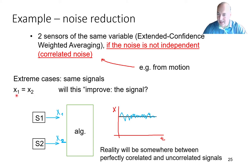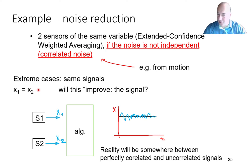The extreme case is that I will use signal x1 equal to signal x2 — exactly the same signal — and the question is whether this will improve the signal quality and reduce the noise. The obvious answer is that it will not improve the signal at all. The reason is simple: if this would work, I could take just one signal, apply the processing algorithm, and get reduced noise. So if I want to reduce the noise, I need to use signals with different sources.